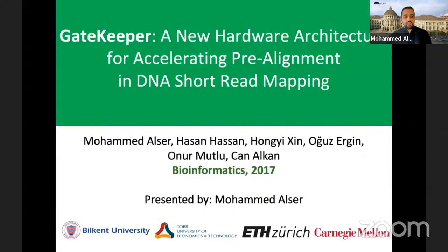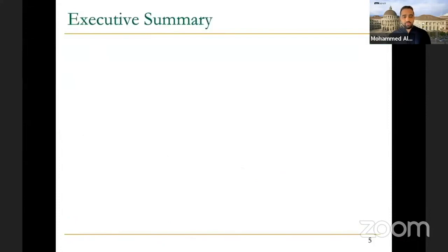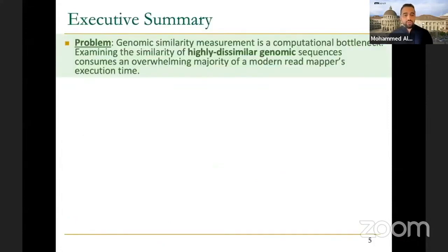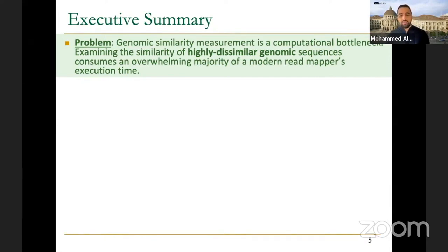Gatekeeper is a new hardware architecture for accelerating pre-alignment filtering in DNA short read mapping. We will continue covering different topics in read mapping for the following three to four weeks and then move on to a new topic. The executive summary: the problem is that genomic similarity measurement is a computational bottleneck — it's really expensive — and we would like to solve this problem. We cannot replace this expensive algorithm with something inexpensive, but we can reduce how often we invoke it.